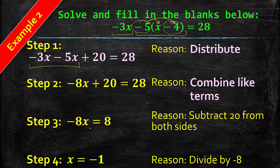Just so you can kind of see how the flow goes: here we subtracted 20 from both sides, and that's how we got to this one here. Reason: subtract 20 from both sides. And we divide both sides by negative 8, and that's how we got here. Reason: divide by negative 8. And that's really all there is to it.